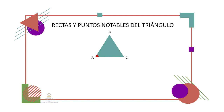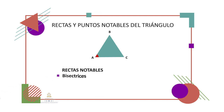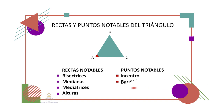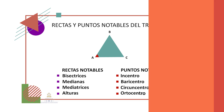Entre las rectas notables más conocidas de un triángulo se pueden nombrar las mediatrices, las medianas, las alturas y las bisectrices. Cada una de estas rectas notables determina cierto punto notable: circuncentro, varicentro, ortocentro e incentro respectivamente.